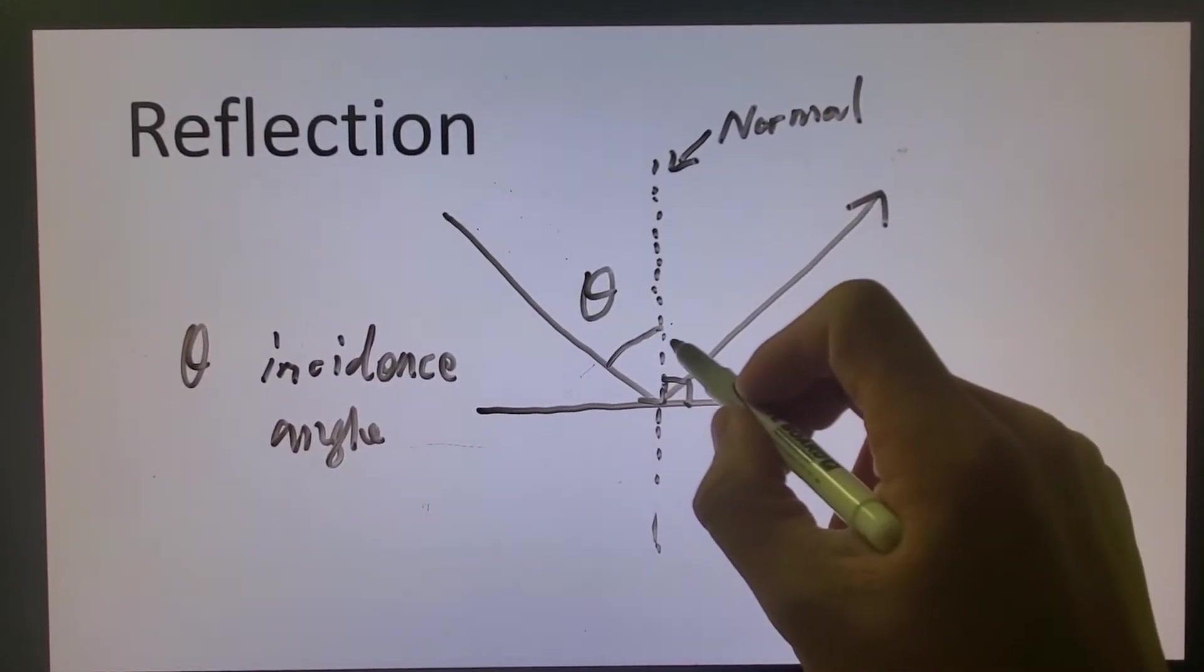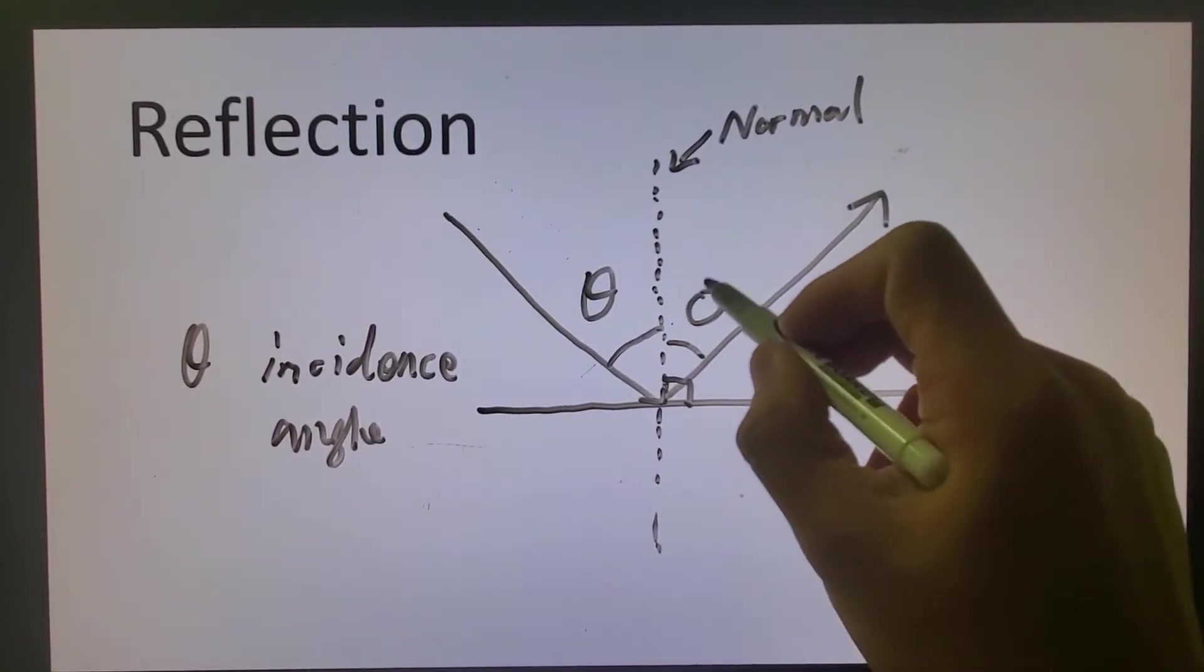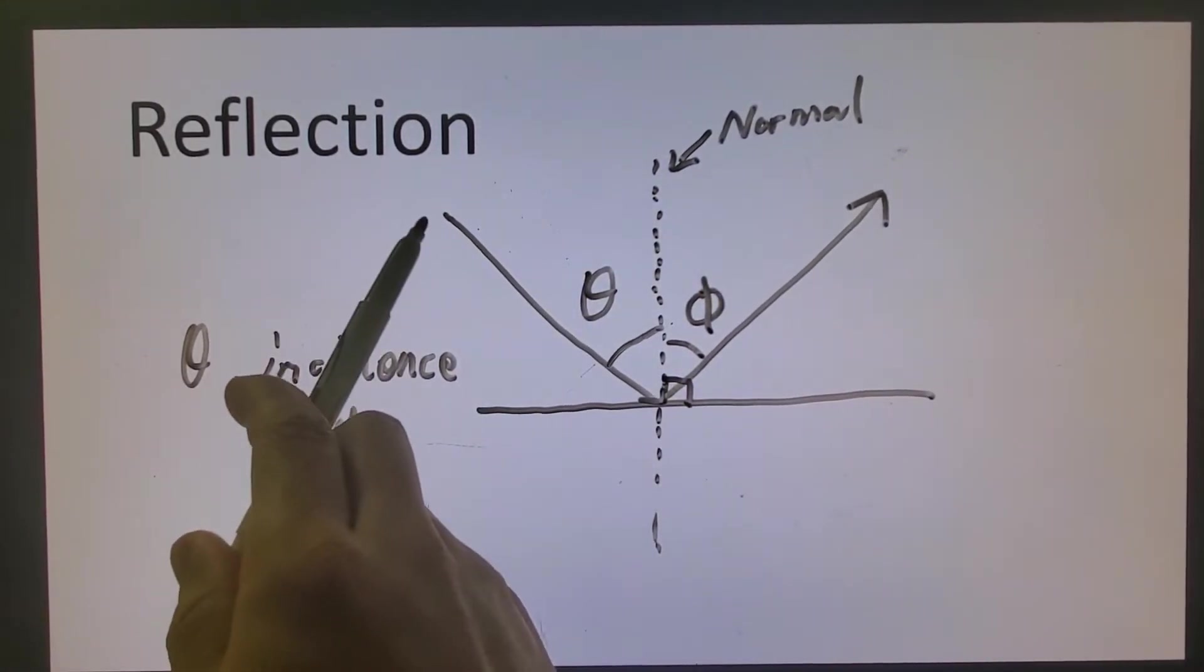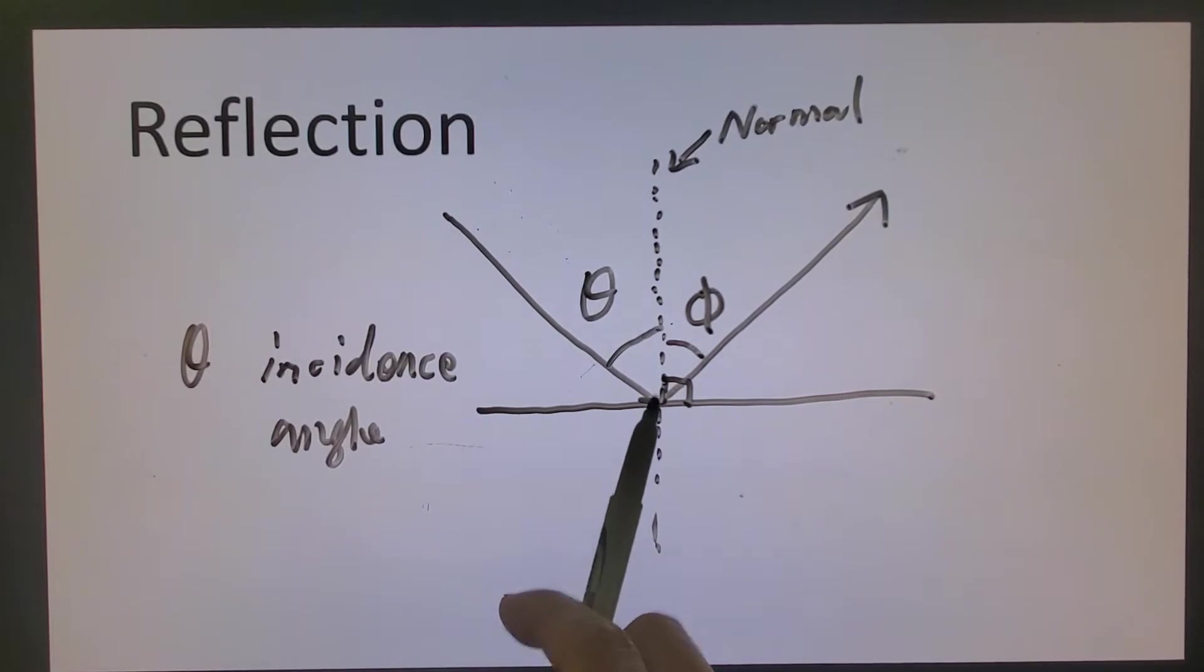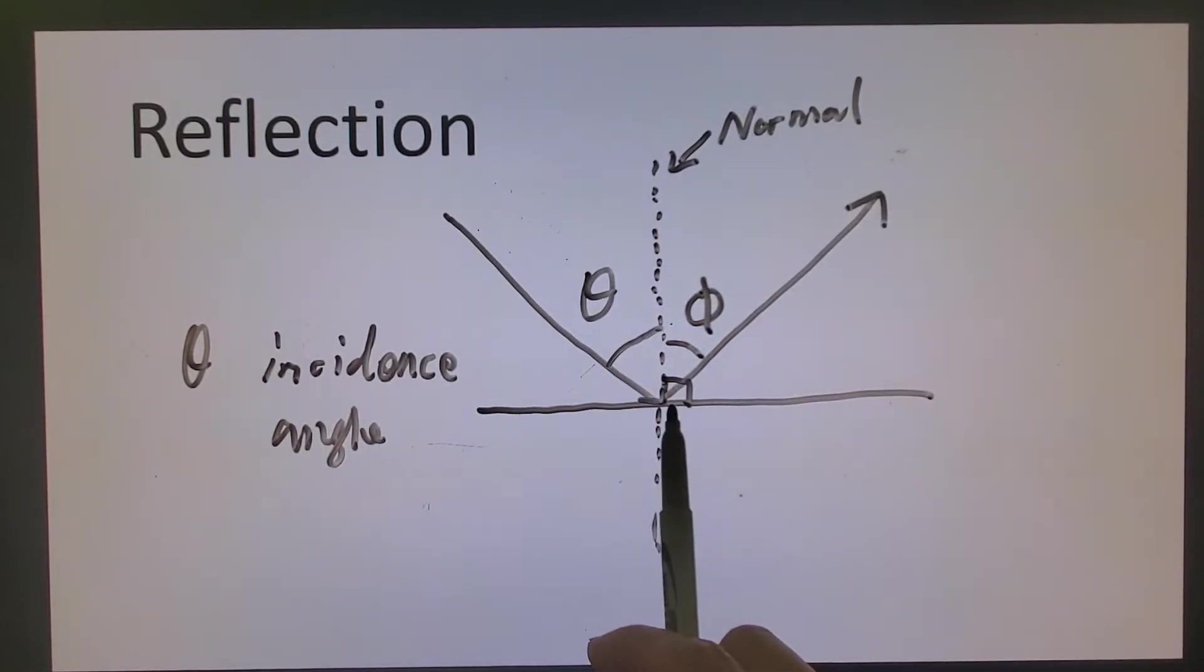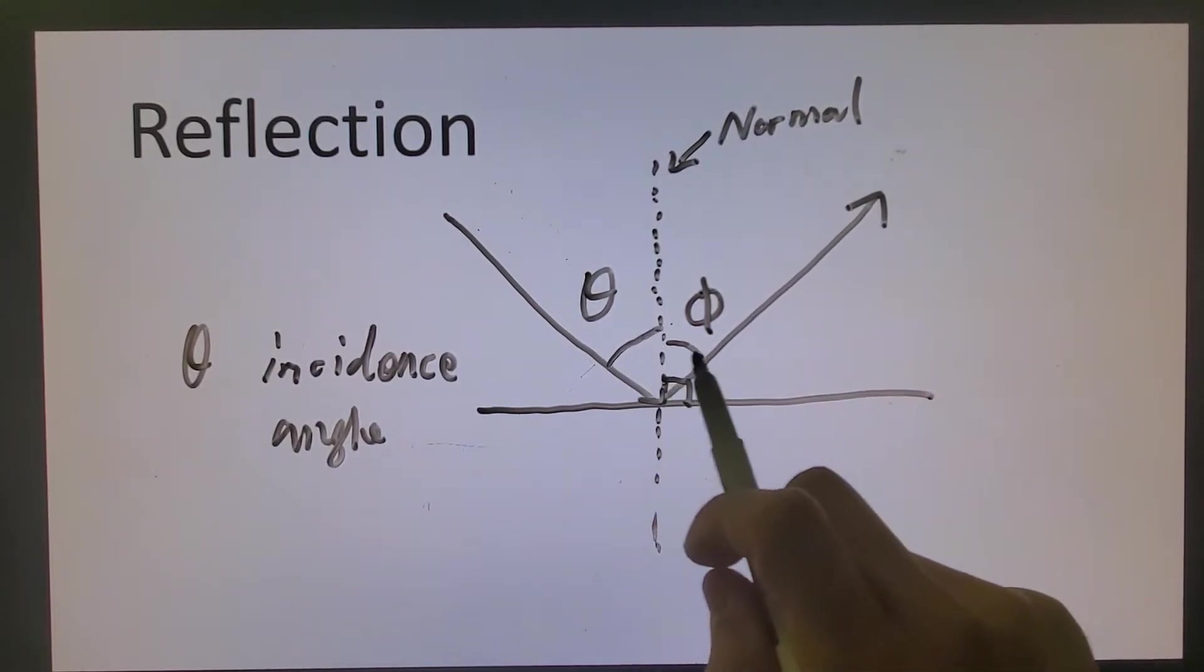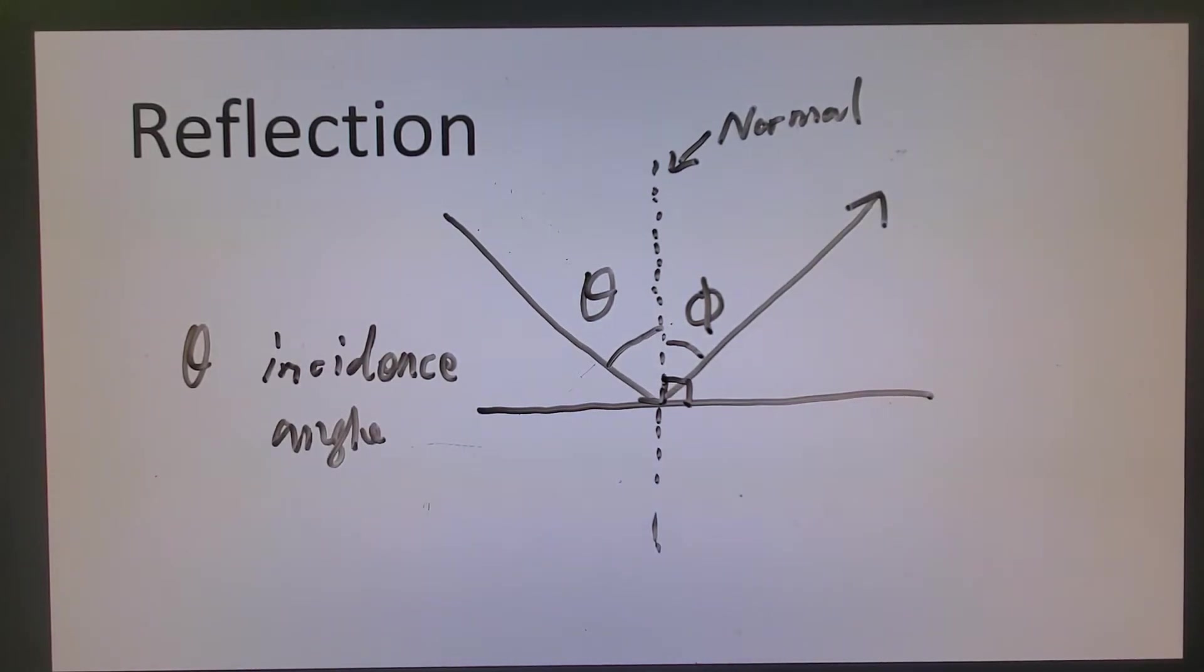There's another angle going out, let's call it phi. So what happened is the angle that the incident beam getting in will be equal to the angle of the reflected beam that is going out. So in this case, theta is equal to phi. That is called the law of reflection.